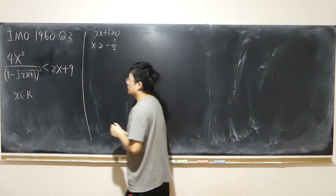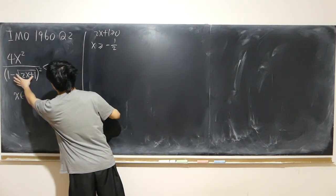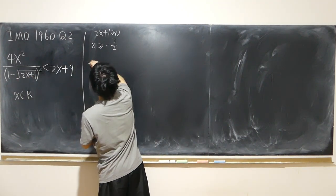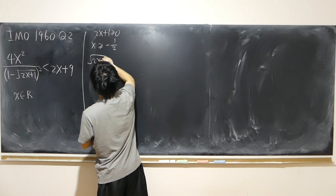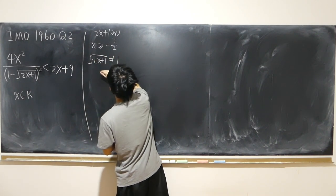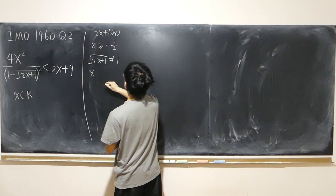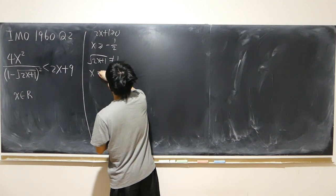Second of all, denominator cannot be zero, so square root of 2x plus 1 cannot equal to 1. In other words, x cannot equal to zero.